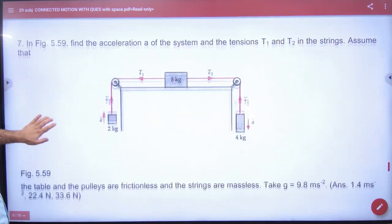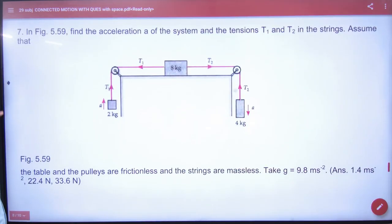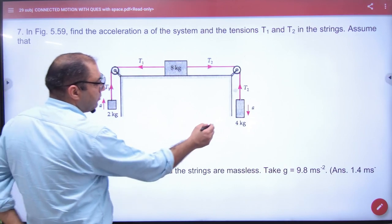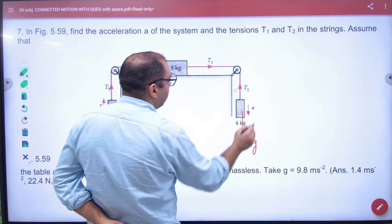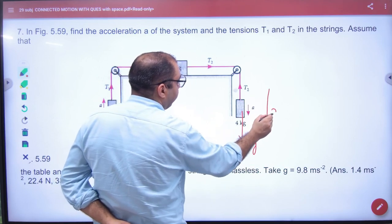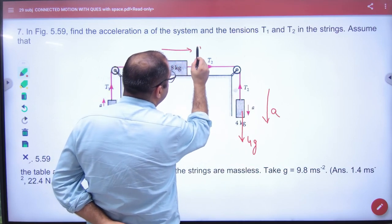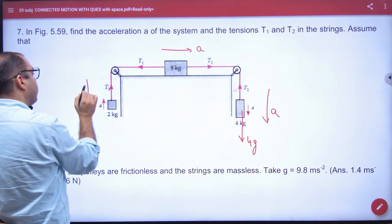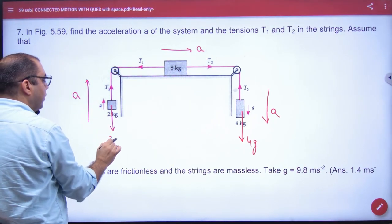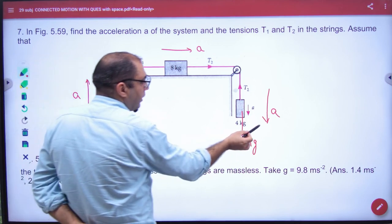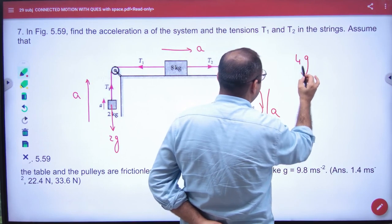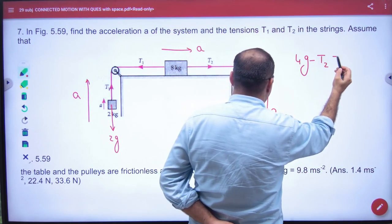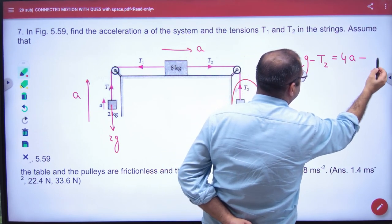I don't know about this question. In the 7th, how much weight it is? 4G. So where will it be? What weight it is? 2G. Accordingly, because it is down, the first equation is 4G minus T2 is 4 into A. This is your first equation.